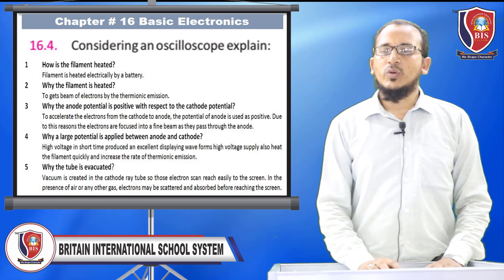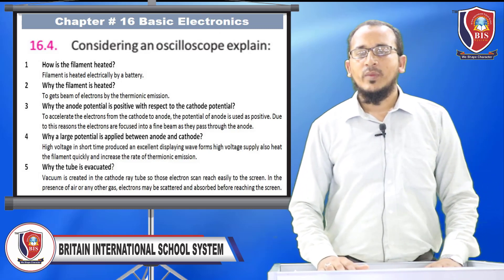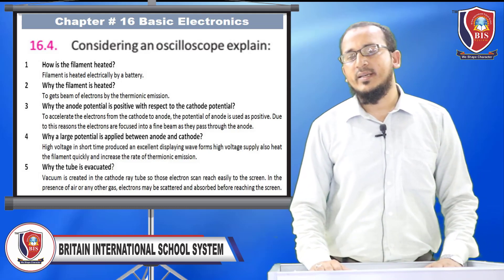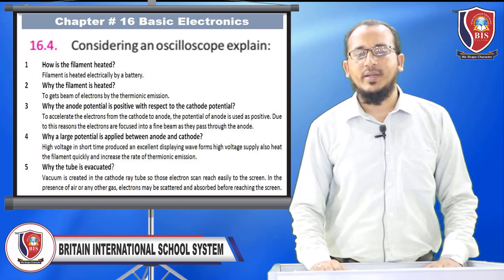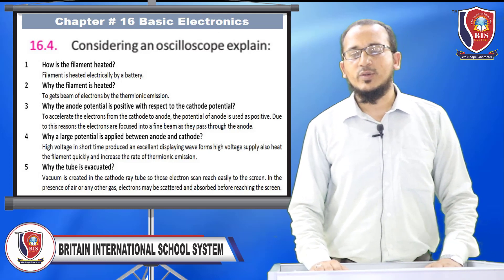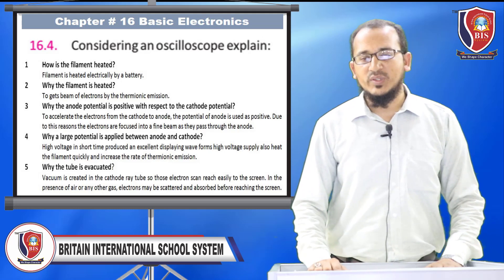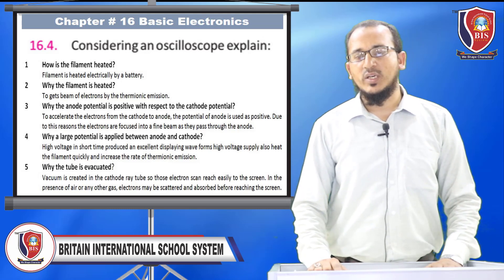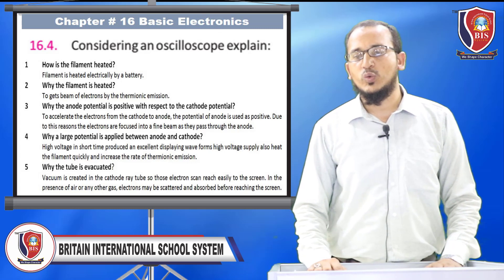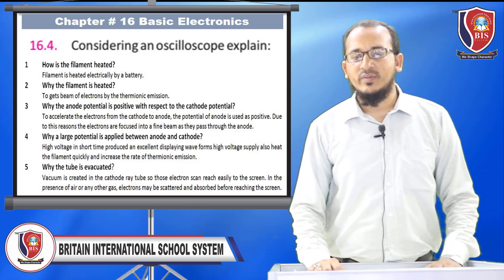Question number four: Considering an oscilloscope, explain: How is the filament heated? — The filament is heated electrically by a battery. Why is the filament heated? — To get a beam of electrons by thermionic emission. Why is the anode potential positive with respect to the cathode potential? — To accelerate the electrons from cathode to anode; the positive potential of the anode accelerates the electrons and focuses them into a beam as they pass through.